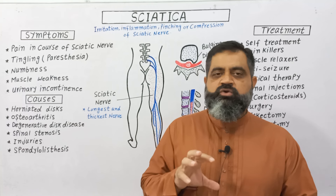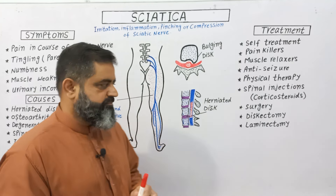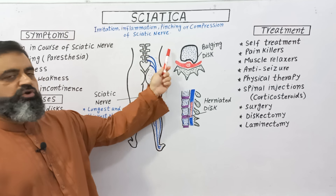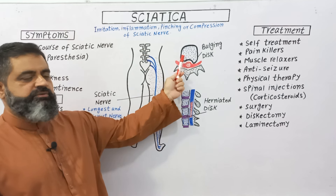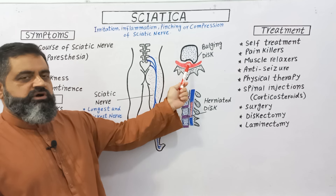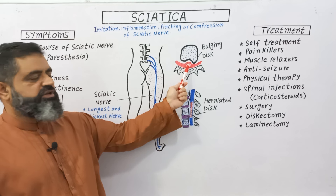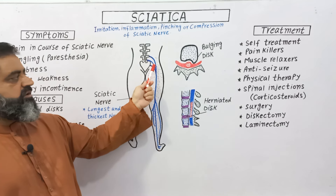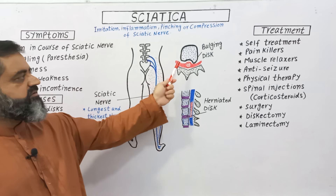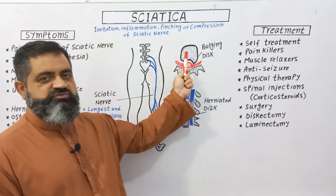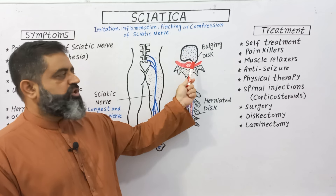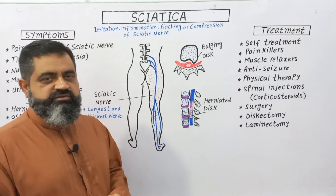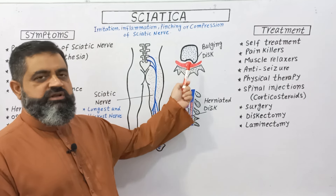Now we are going to discuss these causes with the help of a diagram. This diagram is taken from the vertebral column — this is a bone known as a vertebra. In the center of the vertebra, in the foramen, there is the spinal cord, from which the sciatic nerve runs through the leg. When the bone of the vertebral column bulges out and starts compressing the sciatic nerve, this compression can lead to sciatica.